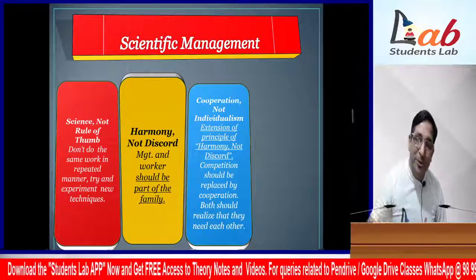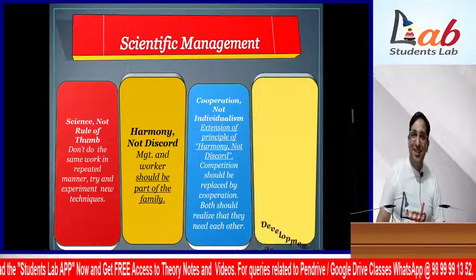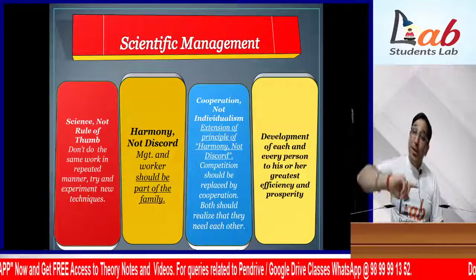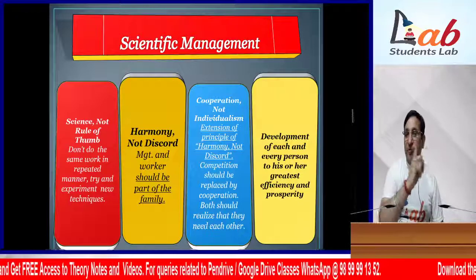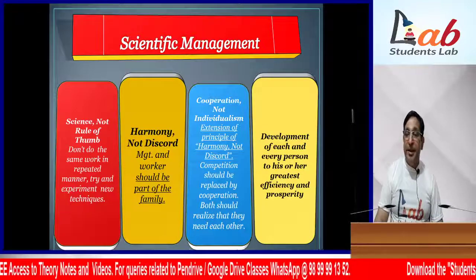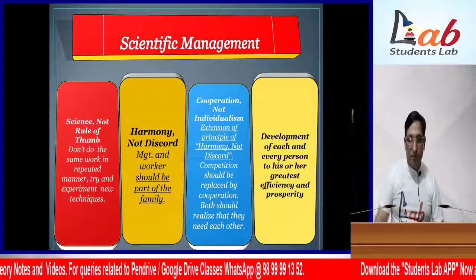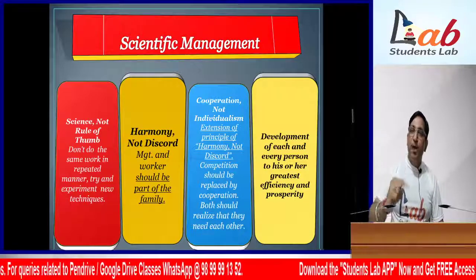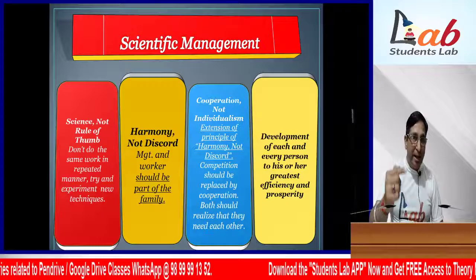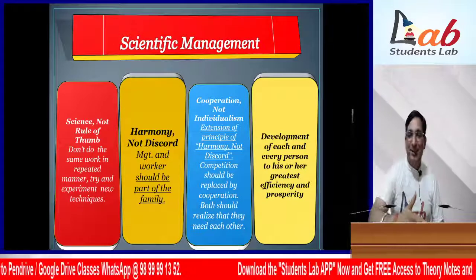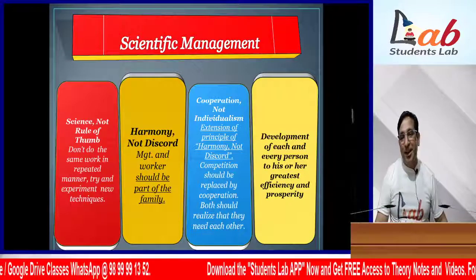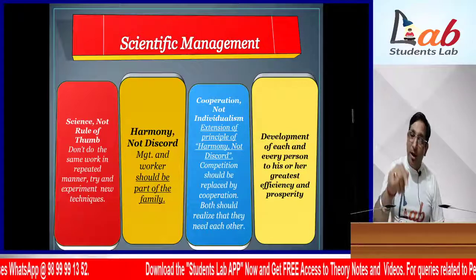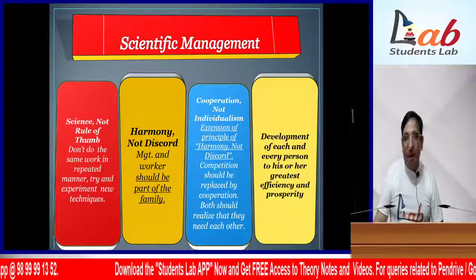Replace competition with cooperation and it will be much better. The last principle is Development of Each and Every Person to His or Her Greatest Efficiency Level and Prosperity. Take every person to their highest level - give them training, develop them. If every employee works at their highest level, the organization will work at the highest level. This is a very strong principle: Development of Each and Every Person to His or Her Greatest Efficiency and Prosperity.